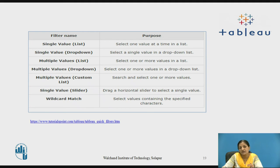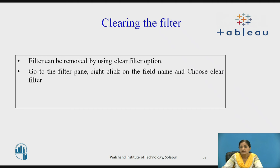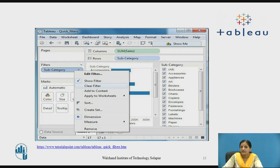In this way we have various filters provided immediately on a single right-click, which is why they are called quick filters. A view has been created taking sum of sales in the column shelf and subcategory in the row shelf, with subcategory dragged to the filters. A filter can be removed using the Clear Filter option — go to the filter pane, right-click on the filter name and choose Clear Filter. Right-clicking on the subcategory dimension gives you the option to clear the filter, which will remove the filter on that particular dimension.